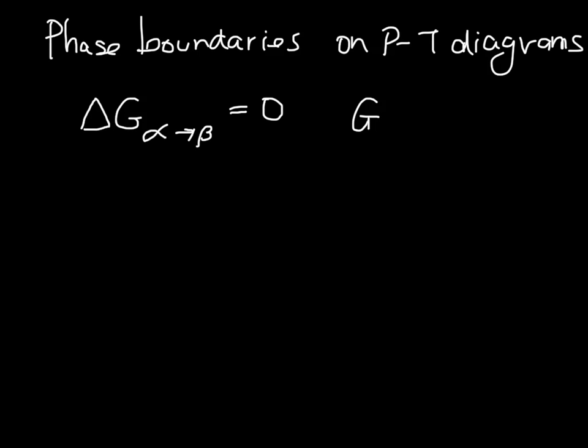This is just another way of saying that G of the alpha phase is equal to G of the beta phase. This came from the fact that their chemical potentials are equal, but for a pure system the chemical potential is equal to the molar Gibbs free energy.